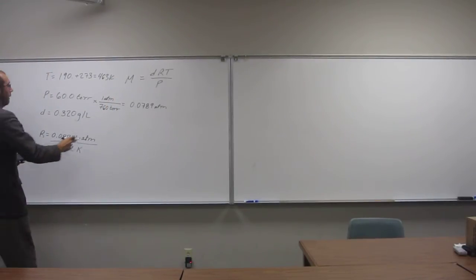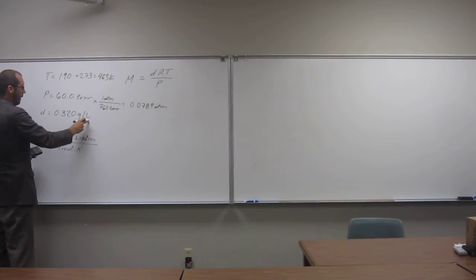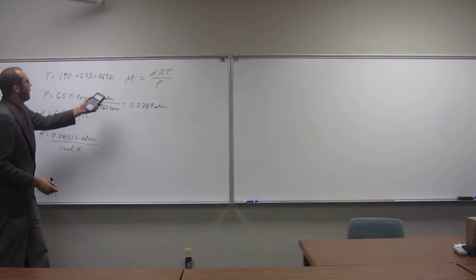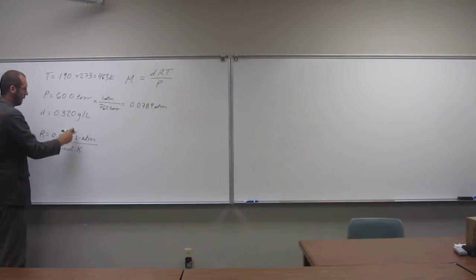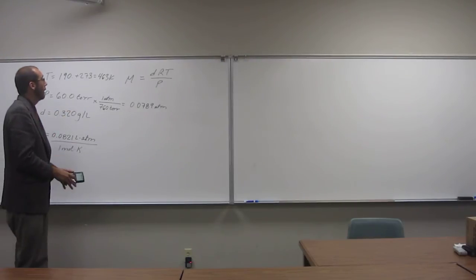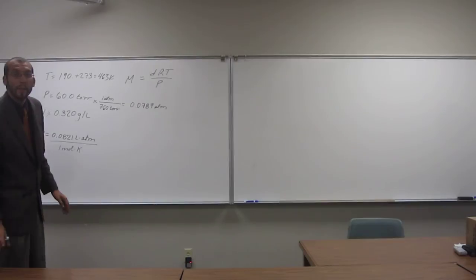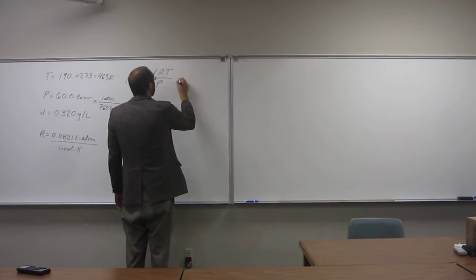Okay, so Kelvin, atm, liters, and we want molar mass to be in grams per mole. So we've got grams and moles left, so this should work out. So let's just plug everything into this and see if our values, our units, don't actually cancel out, or do actually cancel out. Okay.